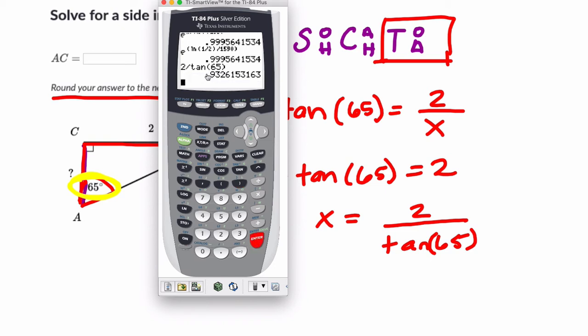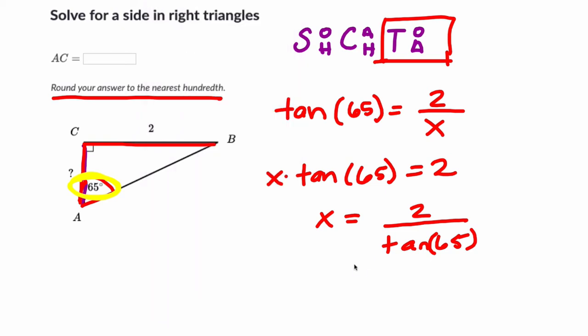And now I just want to do 2 divided by the tan of 65. Hit enter. And round this number to the nearest hundredth, which is 0.93. So X in this case is 0.93. And I always look at my triangle, and I think if this is 2, it seems somewhat reasonable to me that this is 0.93. And then if you enter that answer in here, that would be correct.